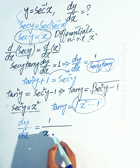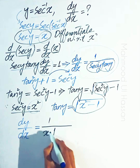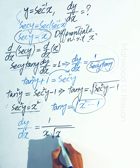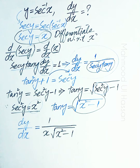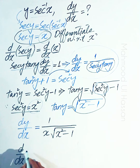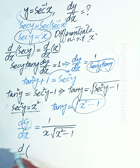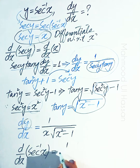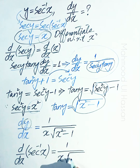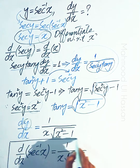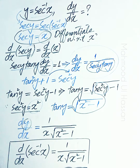Replacing tangent y with square root of x squared minus 1, and substituting dy over dx — replacing y with secant inverse x — so the derivative of secant inverse x is equal to 1 divided by x into square root of x squared minus 1. This is the derivative of secant inverse of x.